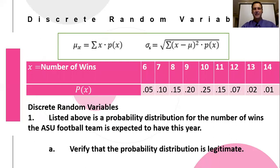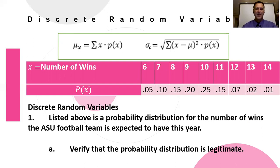Here's a table describing the number of wins a team would have in a football season and the respective probabilities for each potential number of wins. These are called discrete numbers — in this case whole numbers — because you can only have, for example, six wins or seven wins or eight wins. You cannot have six and two-thirds wins.